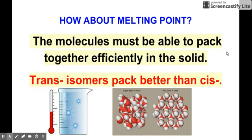Melting point, or also freezing point, which is the reverse of that, is when the molecules pack together efficiently to become solid, or from solid it melts. Trans isomer, based on their conformation, they pack better than cis. If they pack better, that means you can freeze them easier compared to the cis.